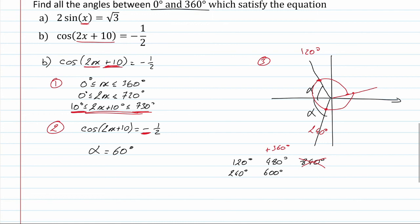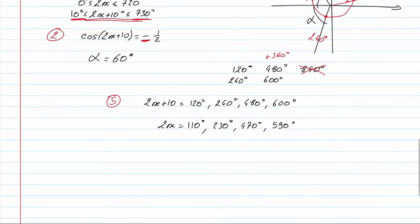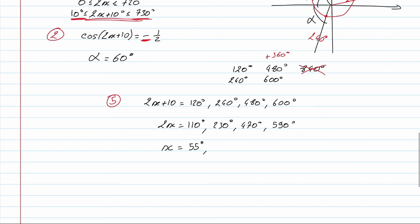We have 4 solutions. So 2x plus 10 equals 120, 240, 480, and 600 degrees. Now we solve for x: first we subtract 10, giving 2x equals 110, 230, 470, and 590 degrees. Then we divide by 2, so x equals 55 degrees, 115 degrees, 235 degrees, and 295 degrees. We have our final solution.